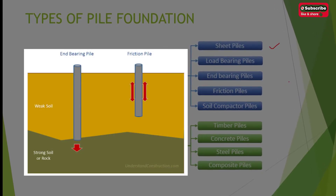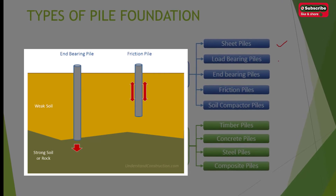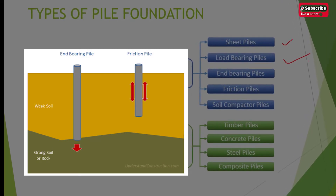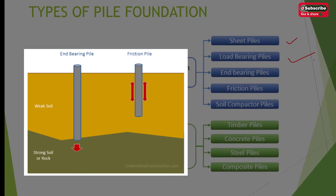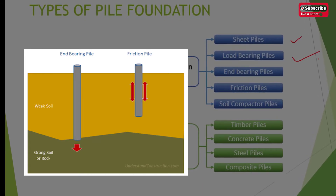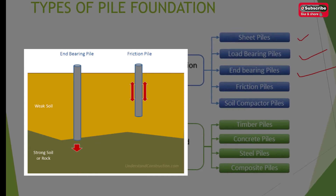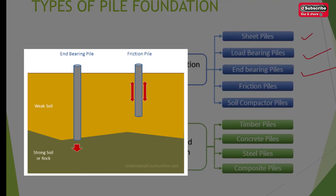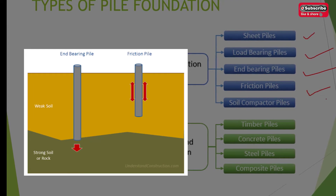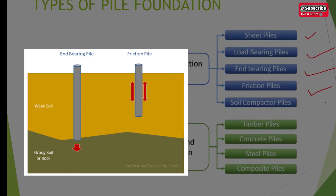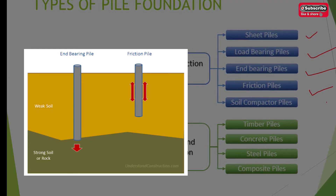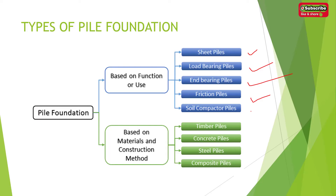Load bearing piles are used for carrying vertical loads from the superstructure. The load is carried mainly in two ways: through end bearing piles, where the piles rest on hard strata like rock, and friction piles, which are inserted to a certain depth and transfer loads to the ground through frictional forces. When a large number of piles have to be used in a small area, soil compactor piles are used.